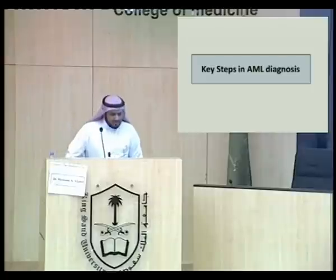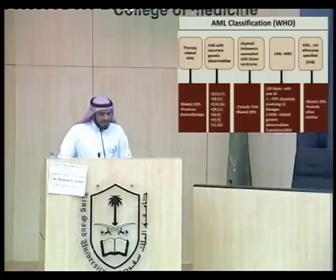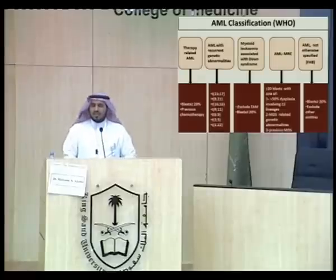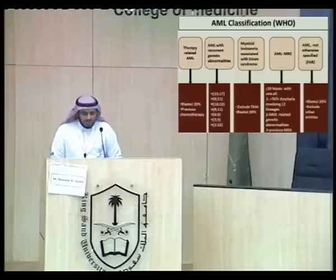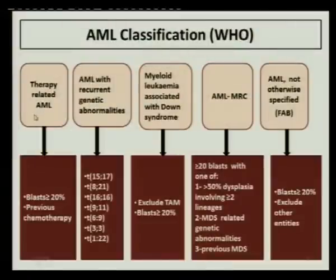Moving to the main topic: cases in AML diagnosis. The WHO classification, which is widely accepted, divides AML into five major categories based on preclinical condition, blast count, genetics, and immunophenotype of the blasts. The first category is therapy-related AML — any previous chemotherapy such as topoisomerase-2 inhibitors or alkylating agents with increased blast count is classified as therapy-related AML.